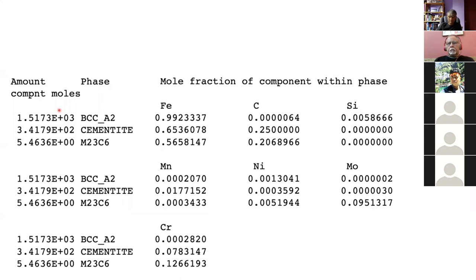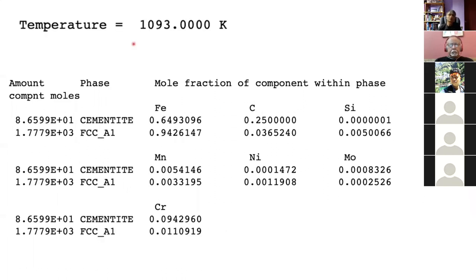As I raise the temperature to over 800 degrees centigrade, austenite becomes the stable phase, ferrite disappears, and M23C6 disappears, but I have a two-phase field consisting of austenite and cementite. You don't normally see that in an iron-carbon phase diagram except when the carbon concentration is above the eutectoid concentration — yet here our carbon concentration is just 0.15 wt%, and we still have a two-phase field because it's a multi-component system.